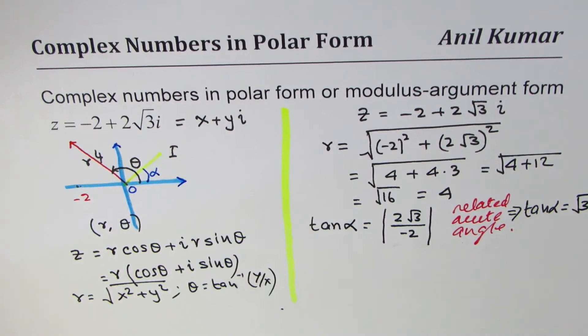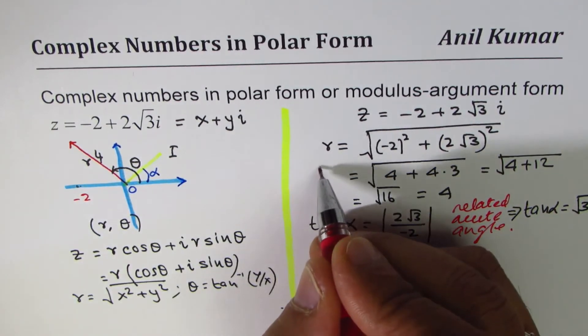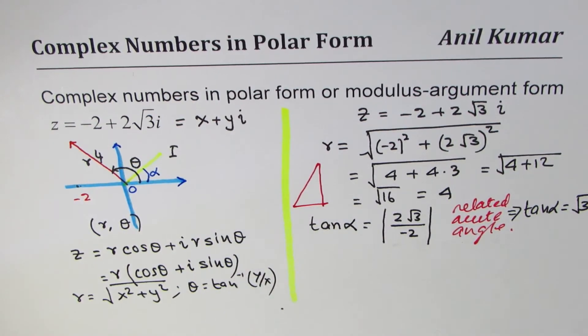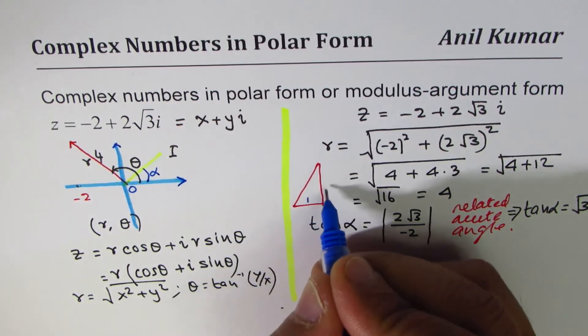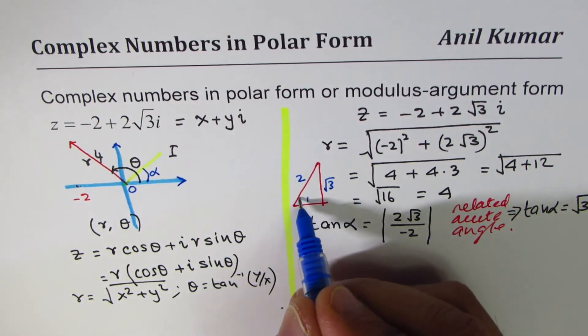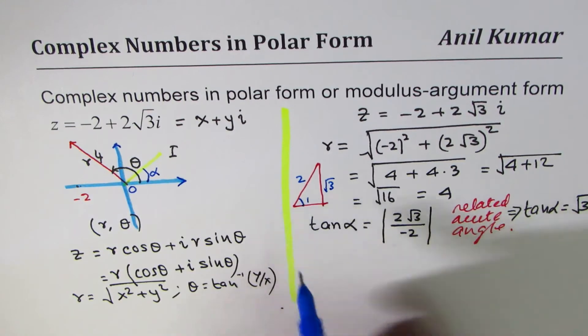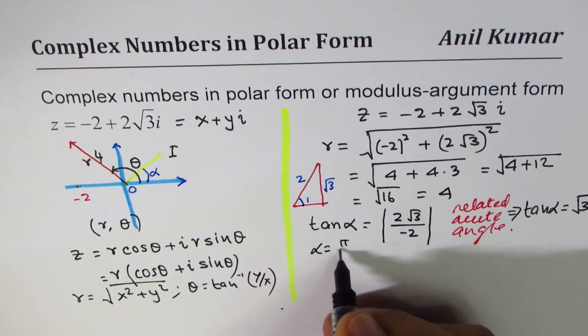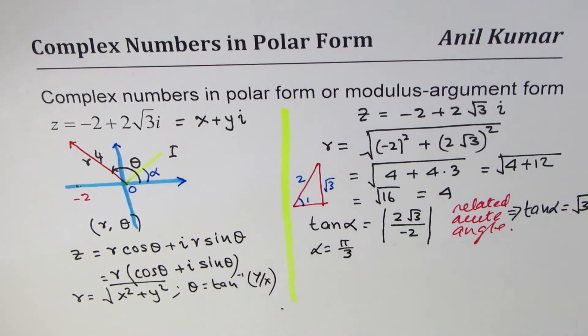You can use calculator, or you can use special triangles. Let me make one here. It's good to use special triangles whenever you can. So square root 3 means this angle, which is pi by 3, or 60 degrees. So we get alpha equals pi by 3. Those of you who want to do it in degrees can write 60 degrees.